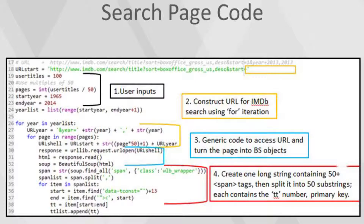This code here goes along with this search page. You'll notice up on the right, that's the only thing that's different in every one of these search pages — it's changing the year and changing the start number of the record, whether it be 1, 50, or 100. So at the top I have where you can change the start year and end year, and also how many per year.